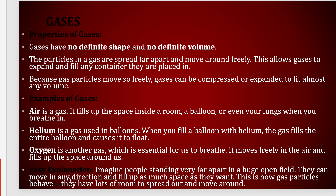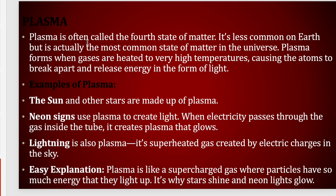The fourth state is plasma. Plasma is often called the fourth state of matter. It is less common on Earth but is actually the most common state of matter in the universe. Plasma forms when gases are heated to very high temperatures, causing atoms to break apart and release energy in the form of light. The sun and other stars are made of plasma. Neon signs use plasma to create light — when electricity passes through the gas inside the tube it creates plasma. Lightning is also plasma — it is superheated gas created by electric charges in the sky. Plasma is like a supercharged gas where particles have so much energy that they light up, which is why stars shine and neon lights glow.